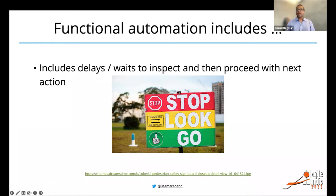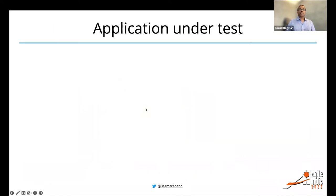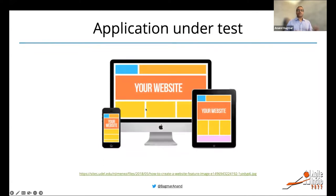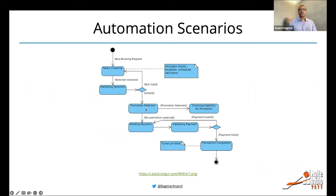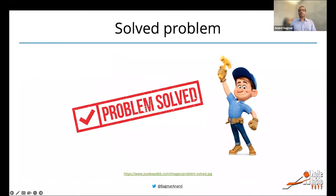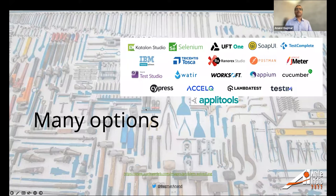To do functional automation, you need to understand your application under test. This application could be a web app, a mobile web app, or a native application on Android, iOS, or tablets. Once you understand your application, you create flow charts, scenarios, or mind maps and prioritize what should be automated. Once you identify these scenarios, it's a solved problem — automation is not new, and there are many options you can choose from.